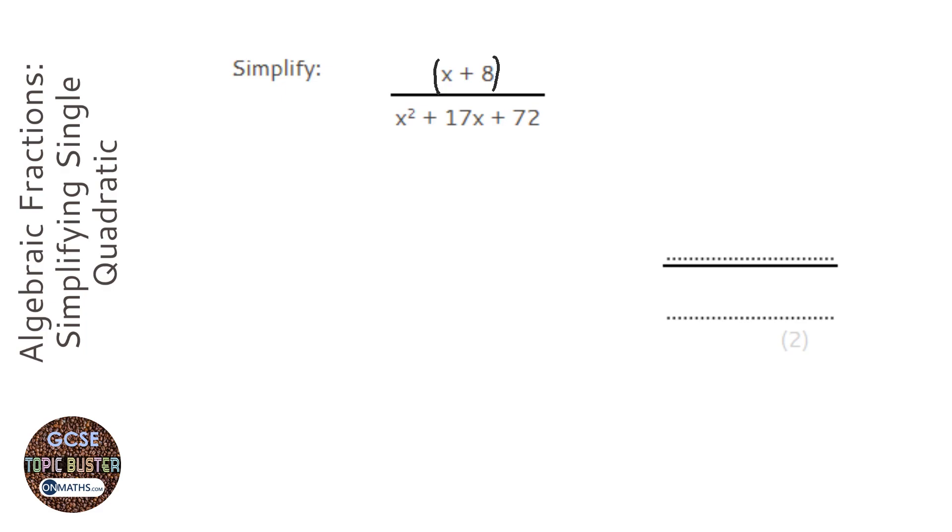The one at the bottom though is quadratic, so what you do with simplifying algebraic fractions is factorize any quadratic you have. So we're going to factorize that one at the bottom.